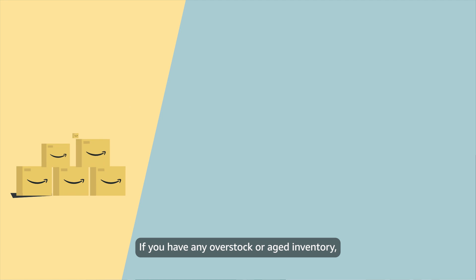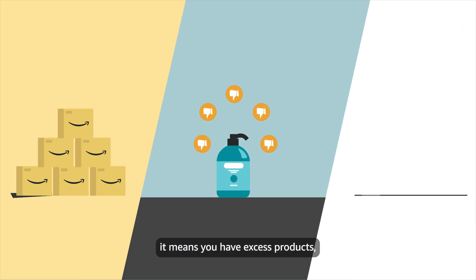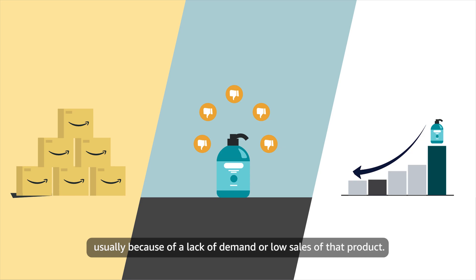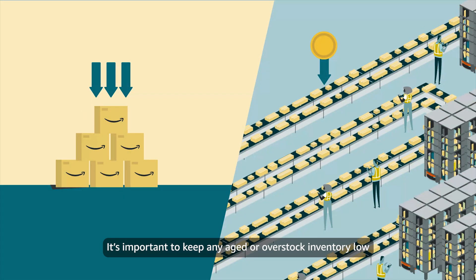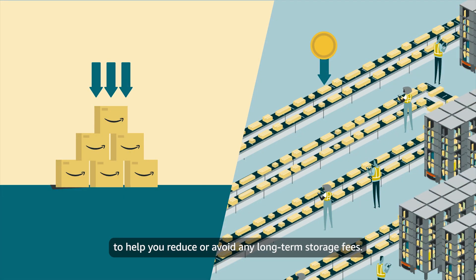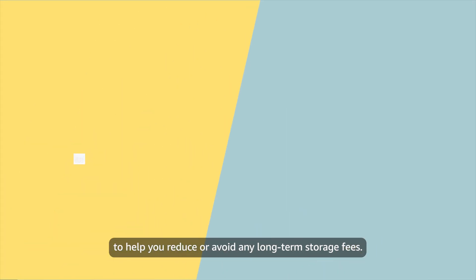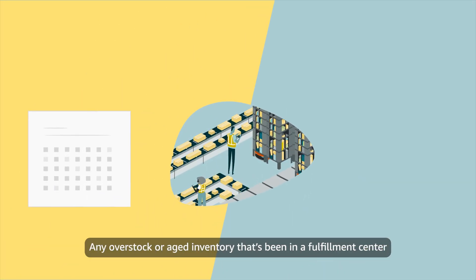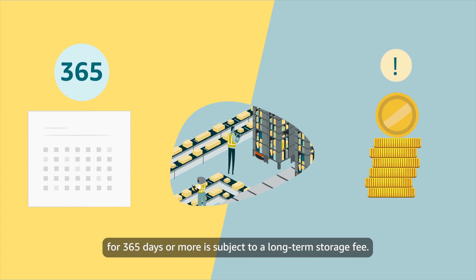If you have any overstock or aged inventory, it means you have excess products, usually because of a lack of demand or low sales of that product. It's important to keep any aged or overstock inventory low to help you reduce or avoid any long-term storage fees. Any overstock or aged inventory that's been in a fulfillment center for 365 days or more is subject to a long-term storage fee.